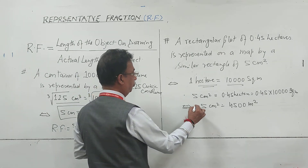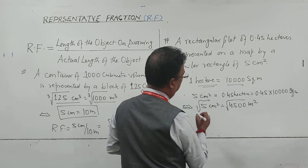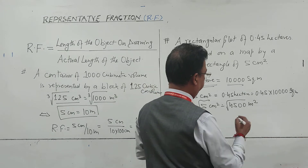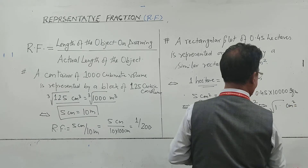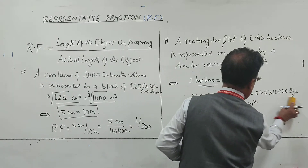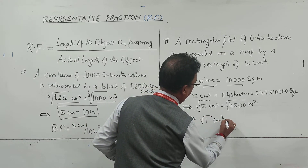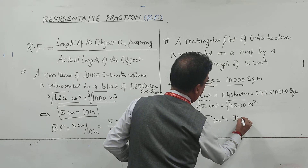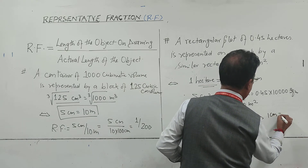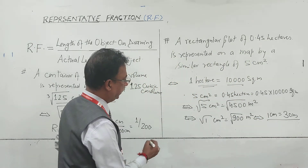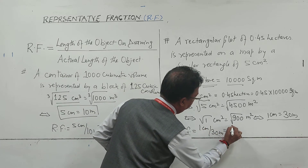Again the proportion is in the form of area, so we square root this. First divide both sides by 5 to get 1 centimeter square equals 900 meter square. Taking the square root gives 1 centimeter equals 30 meter. Now we can easily find the RF. RF for this scale will be 1 centimeter divided by 30 meter, giving 1 upon 3000.